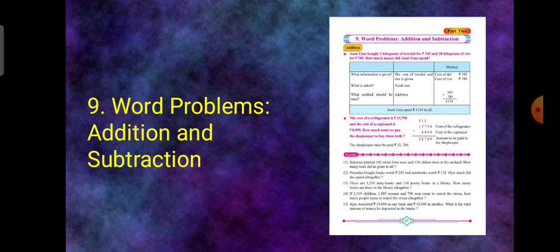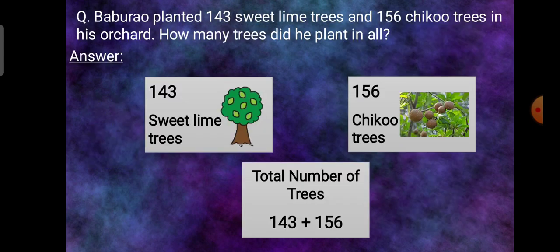You can refer your page number 47. Let's begin with the first question. Baburo planted 143 sweet lime trees and 156 chiku trees in his orchard. How many trees did he plant in all?